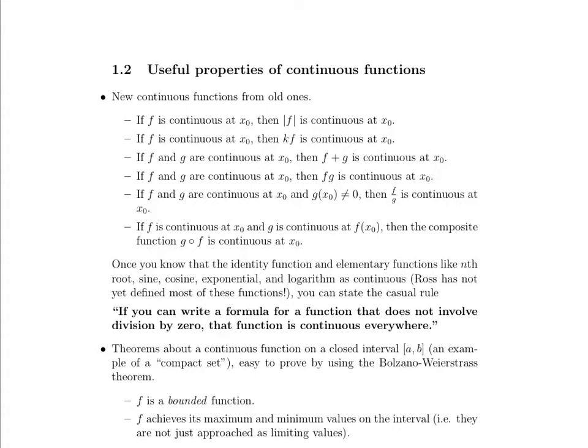First, say we have a function f that we've already proven is continuous, or we know that it's continuous. Note that if f is continuous at a given point x0, then the absolute value of the function f is also going to be continuous at that point.